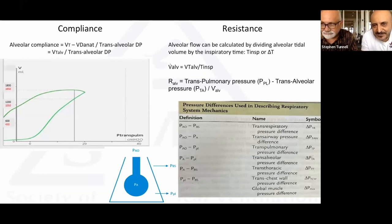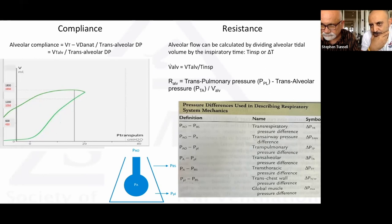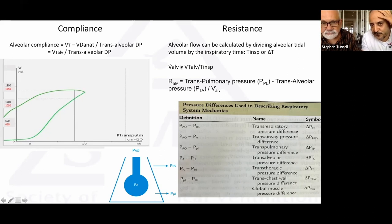We also needed to determine alveolar resistance — again, never mentioned in the literature. The assumption is that alveolar resistance is minimal and most resistance occurs in the large airways. However, there may still be some resistance from viscoelastic and turbulent flow at the alveolar level. To calculate alveolar resistance, we first needed the alveolar flow: alveolar tidal volume divided by total inspiratory time.